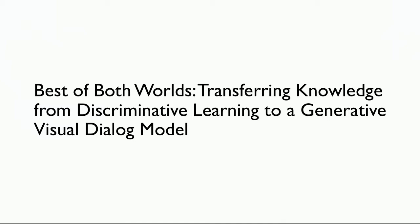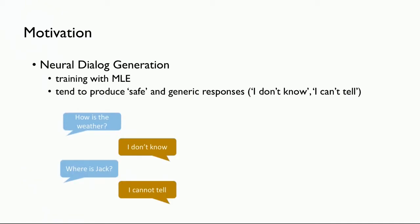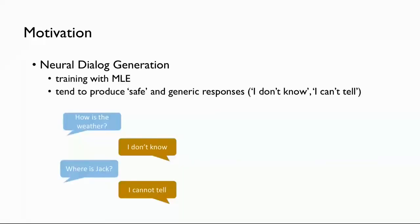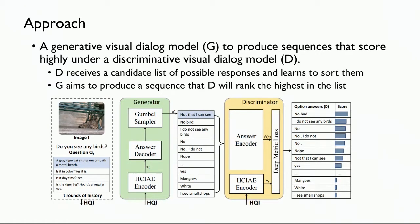The second paper has a similar idea but is for a visual dialogue model. The motivation is that in neural dialogue generation, the model often tends to produce safe and generic responses, such as 'I don't know' or 'I can't tell.' This is very boring for a real application.